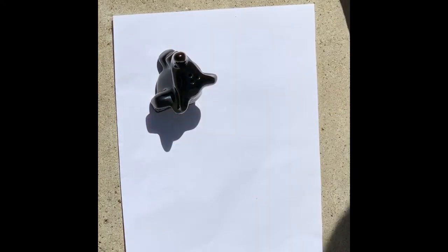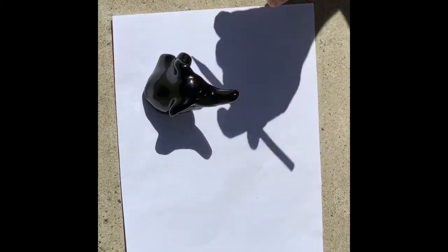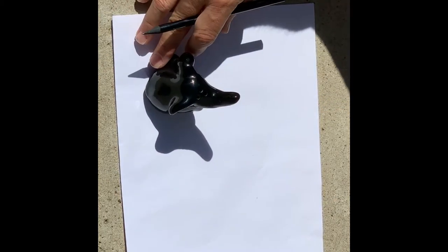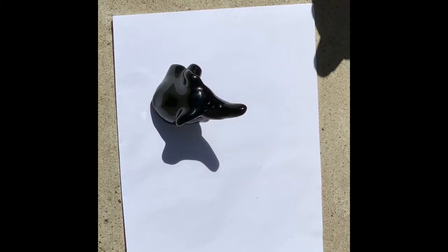I'm going to take a minute here and begin to arrange my objects that I've chosen for this project on my paper. As you can see, I'm trying to place them on the paper so that it casts a specific shadow across the paper.